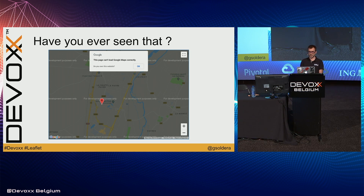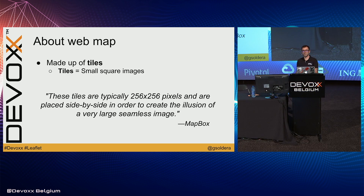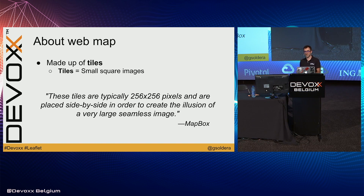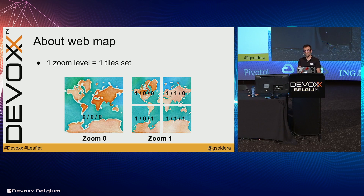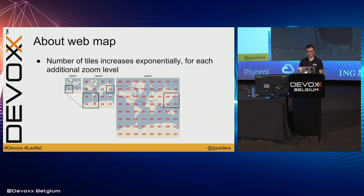Luckily there is an alternative. When we talk about web maps, we must talk about tiles. Tiles are small square images, and when these images are placed side by side in order, they create a map. There is one tileset for one zoom level, and each tile has data including the zoom level and Y and X coordinates. When you increase your zoom level, you increase the number of tiles.